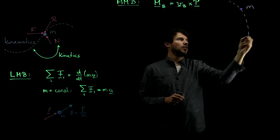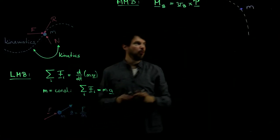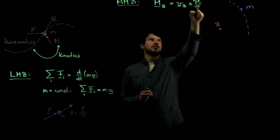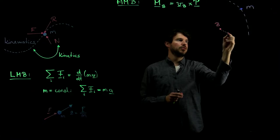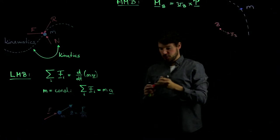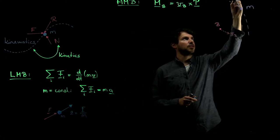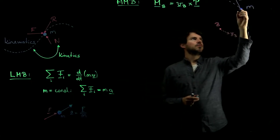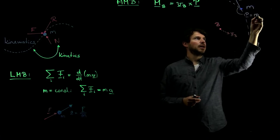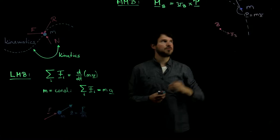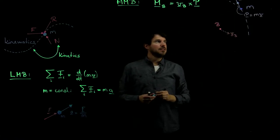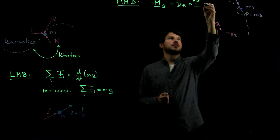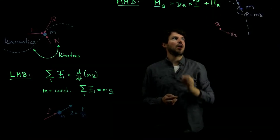You can fix any point B. Our angular momentum balance is then: the velocity of point B — which could be moving, so it could have a velocity VB — cross the linear momentum of my particle P, which is mass times velocity. This equation is not complete though; there's the most important term missing, because we also need plus HB-dot.